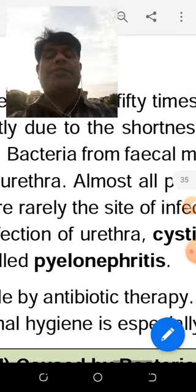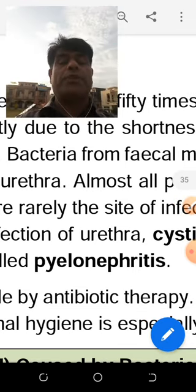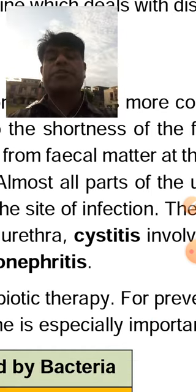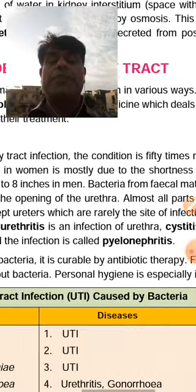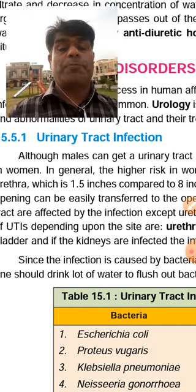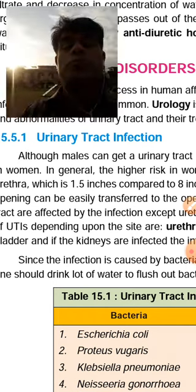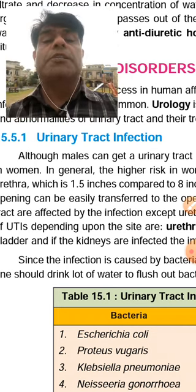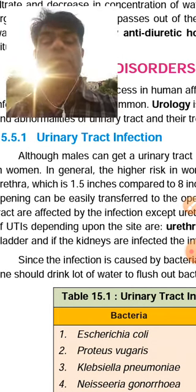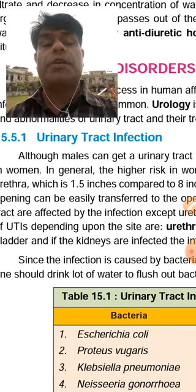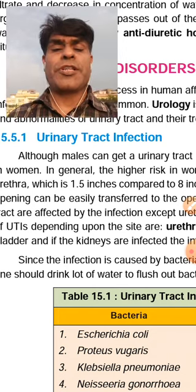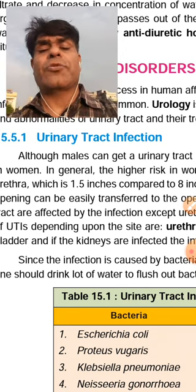Pyelonephritis and polynephritis — both words are used in medical sciences. Pyelonephritis is the infection of the nephron. Urethritis is the infection of the urethra. Cystitis is the infection of the urinary bladder, where urine is stored for some time. The urinary bladder is especially important in the frog, where it is closely associated with the cloaca.